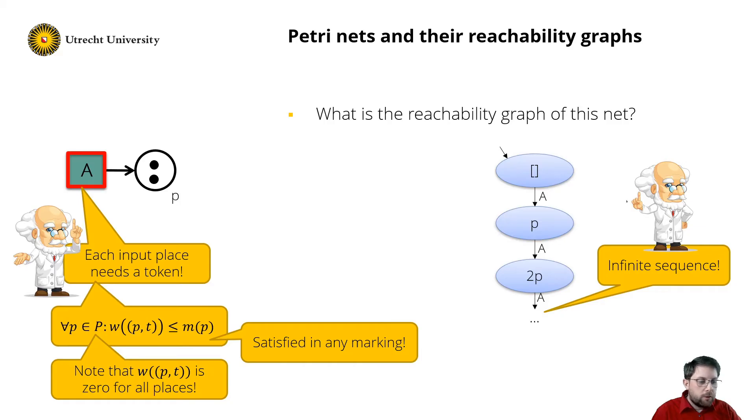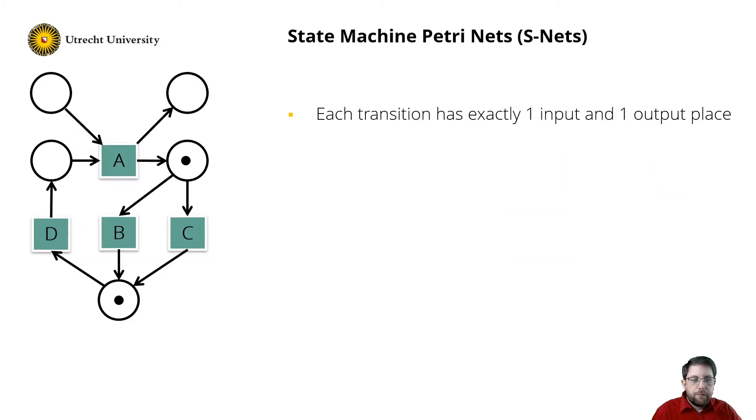For this I want to introduce several classes of Petri nets. A first class are state machine Petri nets, also called S-Nets. In a state machine, every transition has exactly one input and one output place, which we denote as follows. And the dot notation in this formula gives the nodes that are directly before the node, which we call the preset, or directly after a node, called the postset.